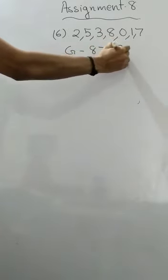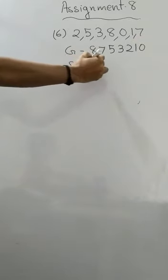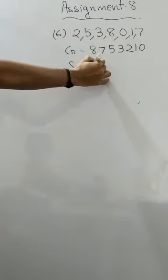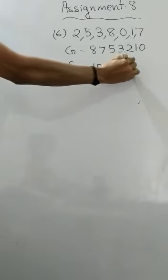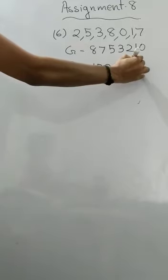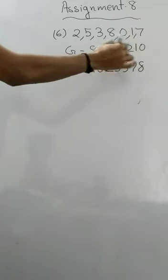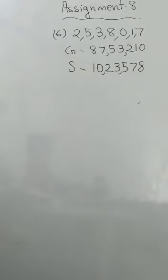Question 6: the set of numbers are 2, 5, 3, 8, 0, 1, 7. For the greatest, write the biggest digit first — that is 8, then 7, then 5, then 3, then 2, then 1, then 0. For the smallest, you can't write 0 first. So write 1 first, then 0 in the second position, then 2, 3, 5, 7, 8. This will be the greatest and smallest.